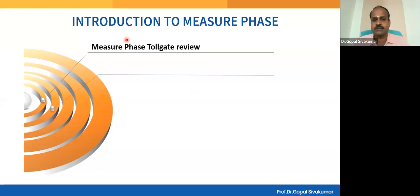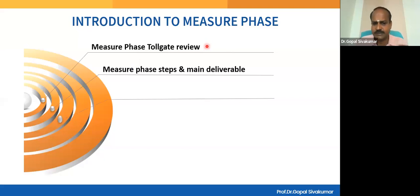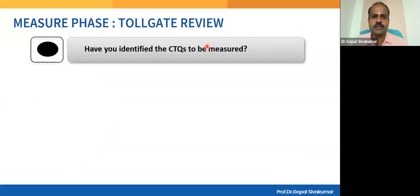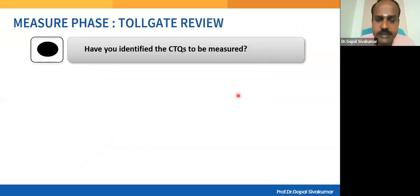At the end of every phase there will be a tollgate review in a Six Sigma project. Certain steps in the measure phase lead to the deliverable of baseline performance. You need to master certain tools. Have you identified the CTQs to be measured? That's why we've been talking about CTQ from the beginning. Even after the measure phase, if the CTQs are not clear, they are not going to solve the problem.